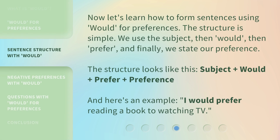Now, let's learn how to form sentences using 'would' for preferences. The structure is simple: subject + would + prefer + preference. Here's an example: 'I would prefer reading a book to watching TV.'